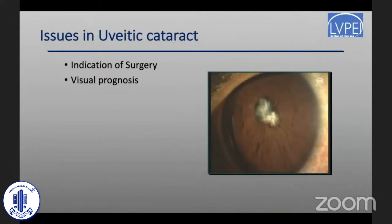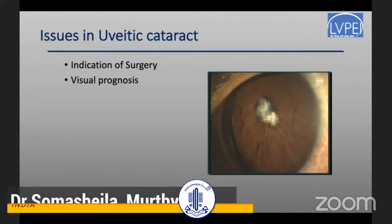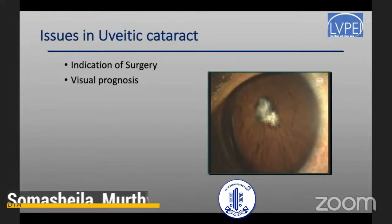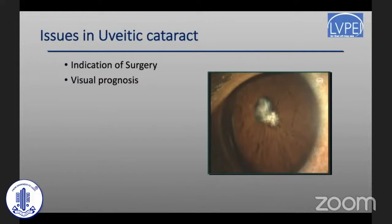Most of the time the indication of surgery is to improve vision, but sometimes we might be operating to have a view of the posterior segment. The visual prognosis must be explained in detail, with a lot of chair time taken to counsel the patient so they have realistic expectations post-operatively and understand that the disease does not end with removal of the cataract — the inflammation needs to be tackled separately.